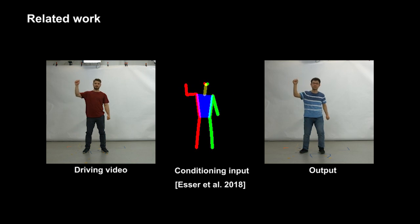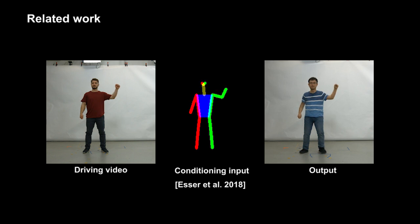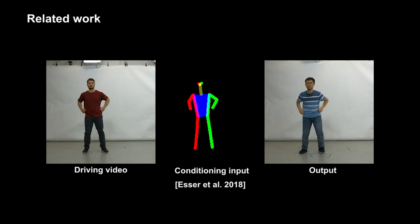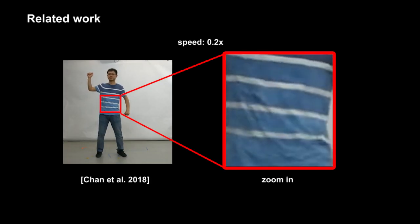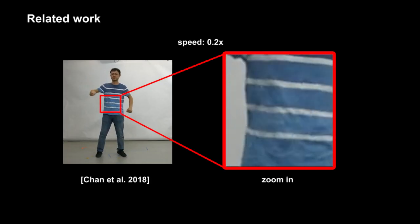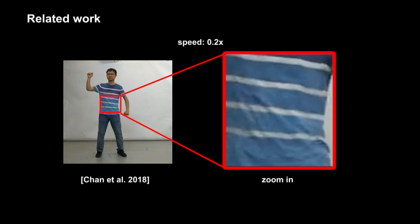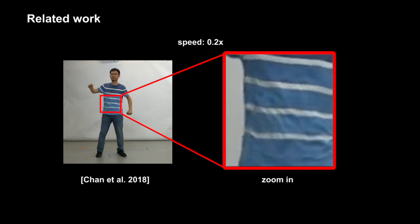In contrast to our method, most of the existing methods learn image translation in 2D screen space. This typically leads to temporally incoherent fine-scale details. For example, wrinkles do not move coherently with the garments.